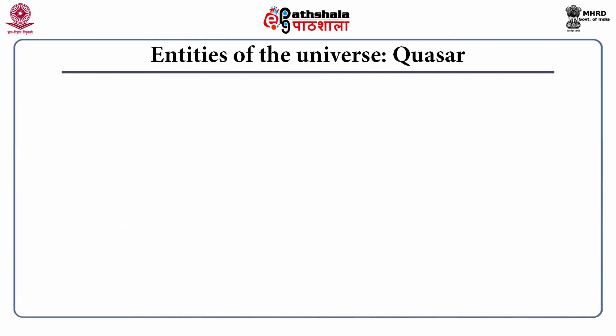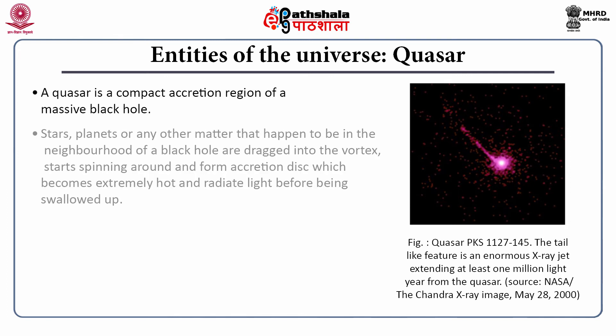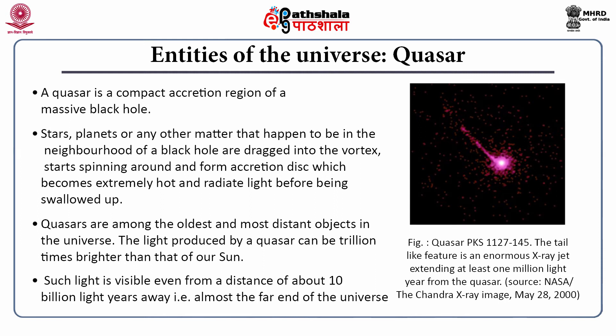The next entity is called a quasar. A quasar is a compact accretion region around a massive black hole. Stars, planets or any other matter in the neighborhood of a black hole are dragged into the vortex, start spinning around it forming an accretion disk, which becomes so hot that it radiates light before those things are ultimately swallowed up. Quasars are among the oldest and most distant objects in the universe. The light produced by a quasar can be a trillion times brighter than our sun, and is visible even from a distance of about 10 billion light years away — almost the far end of the universe.